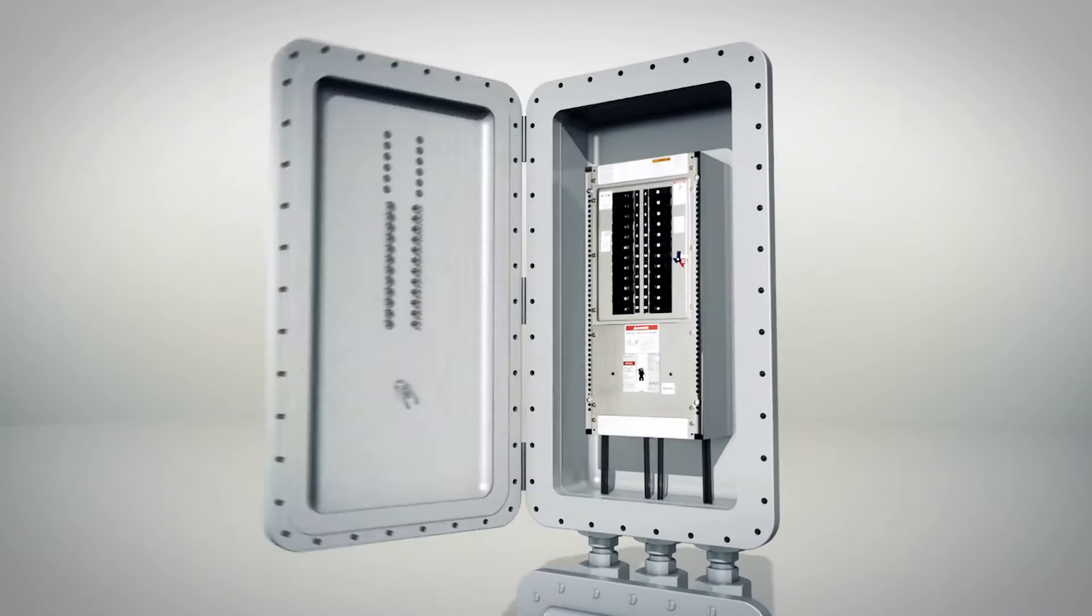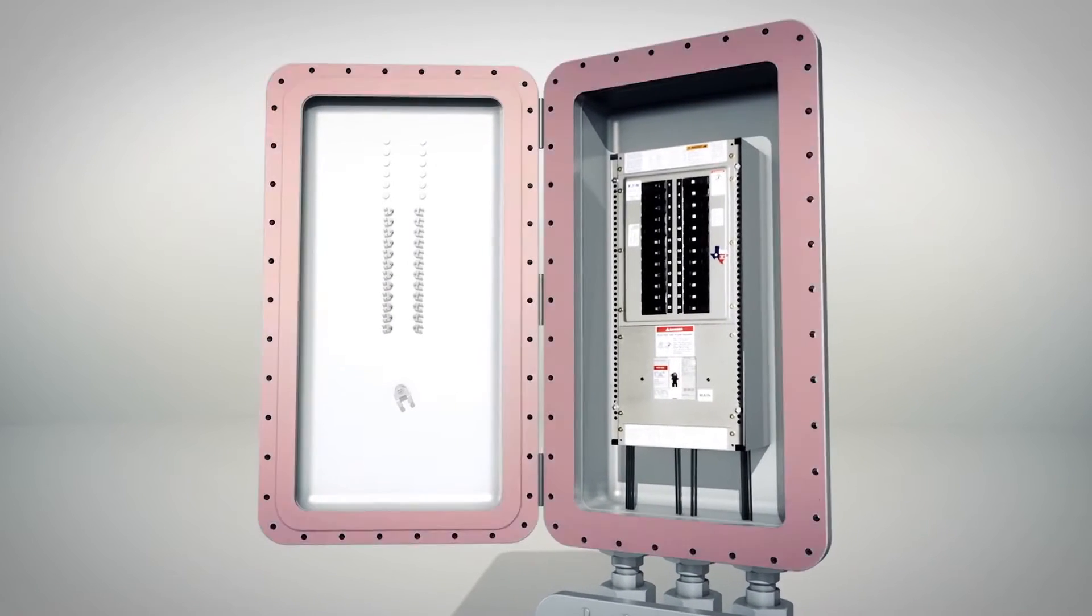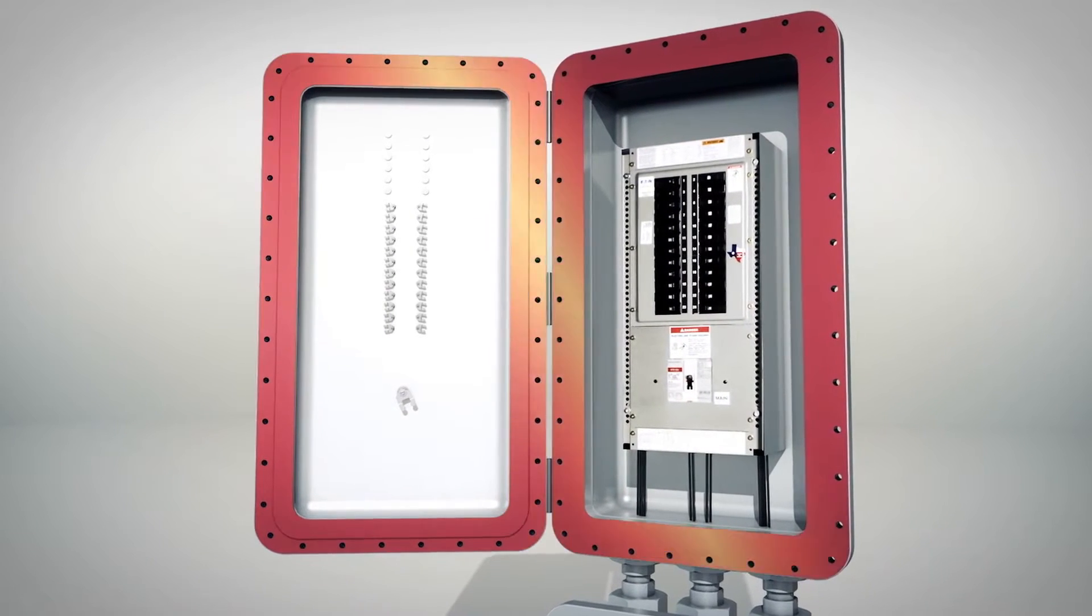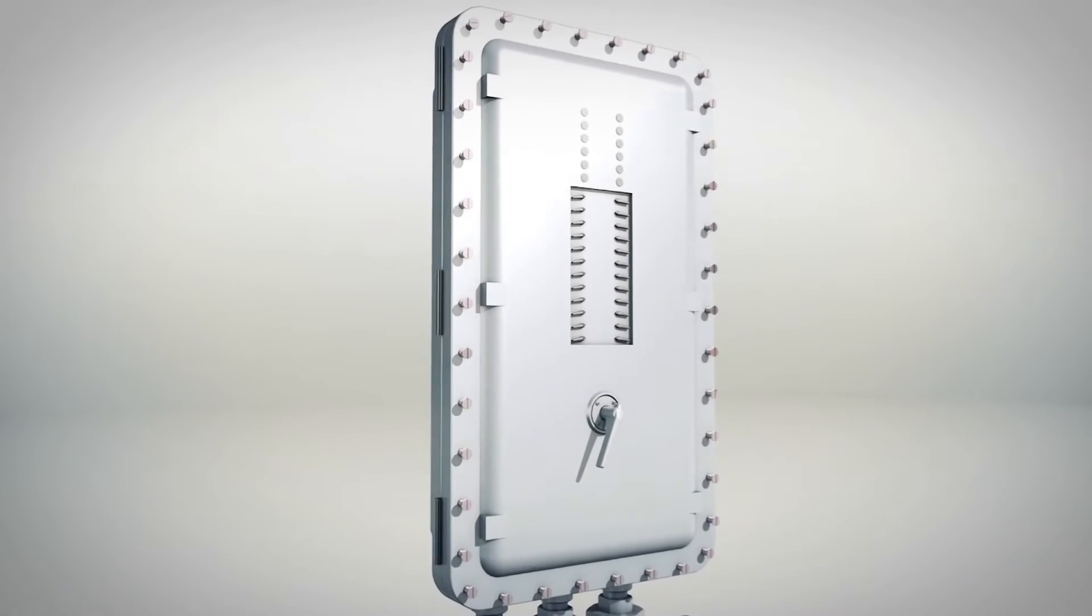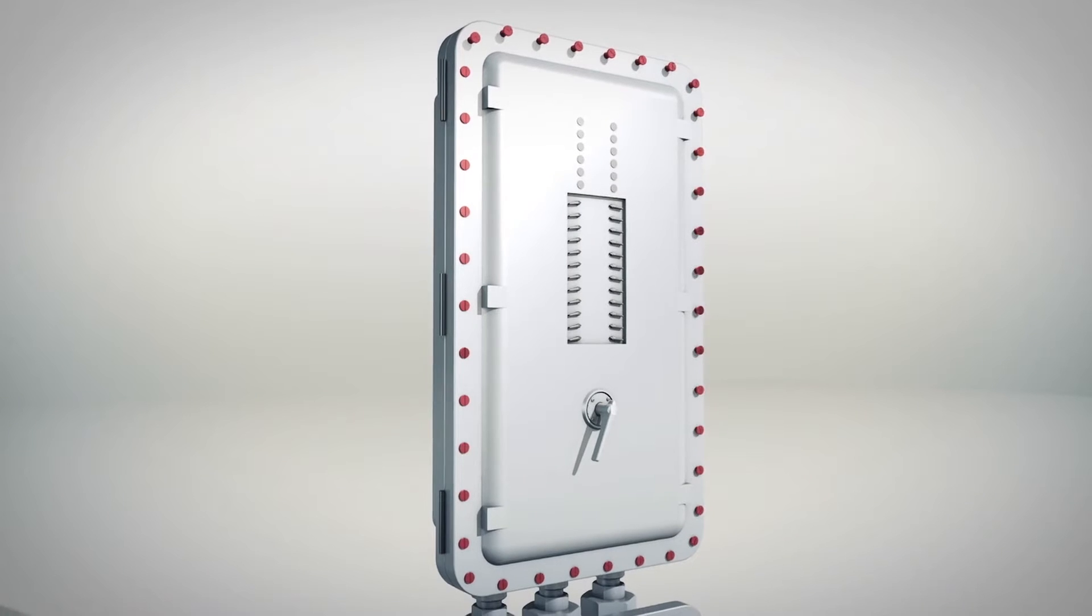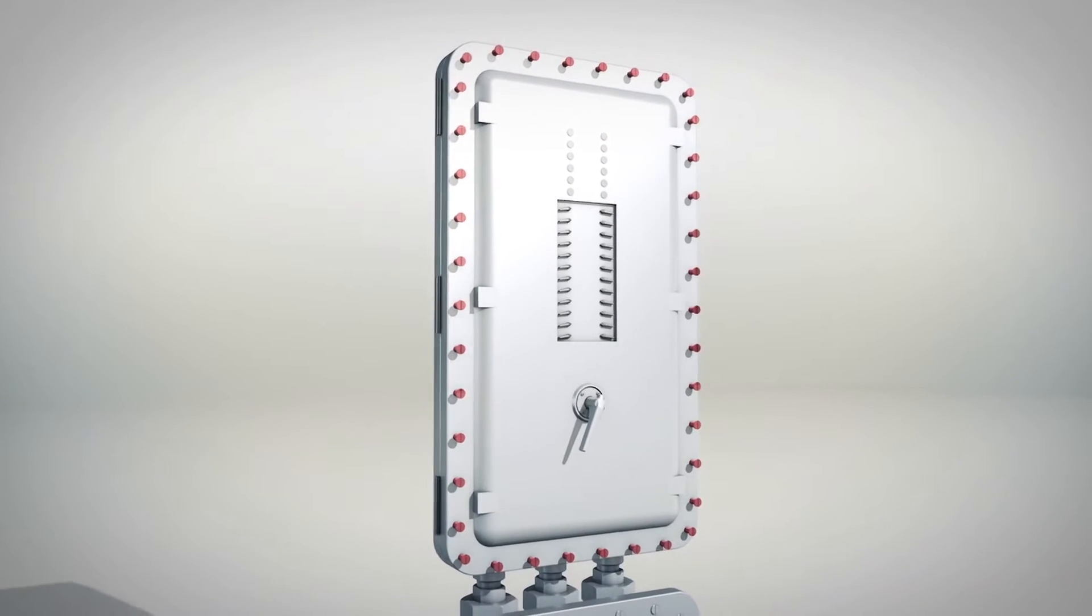Up until now, traditional cast enclosures with a precision ground flame path have been your only choice. The downside of these enclosures is the amount of bolts that need to be fastened and unfastened to maintain the enclosure's integrity.